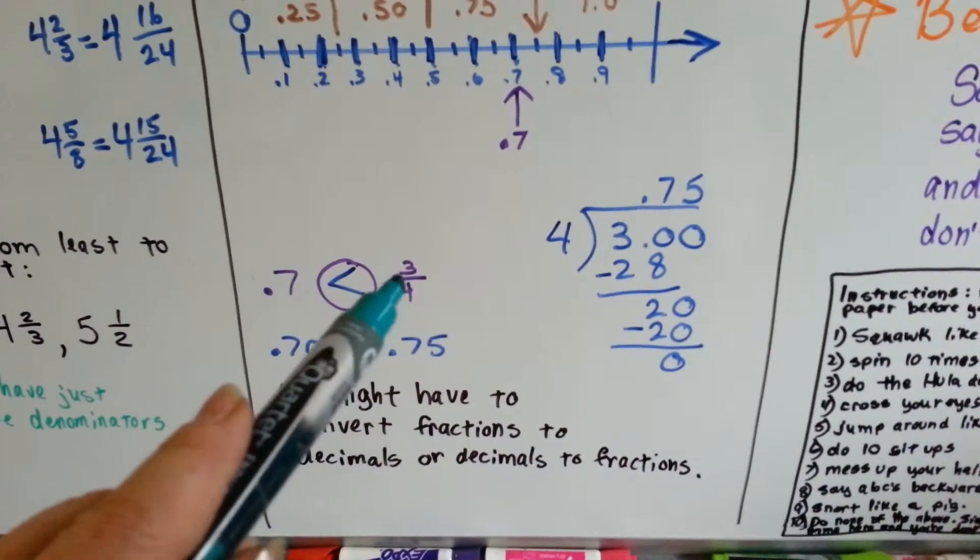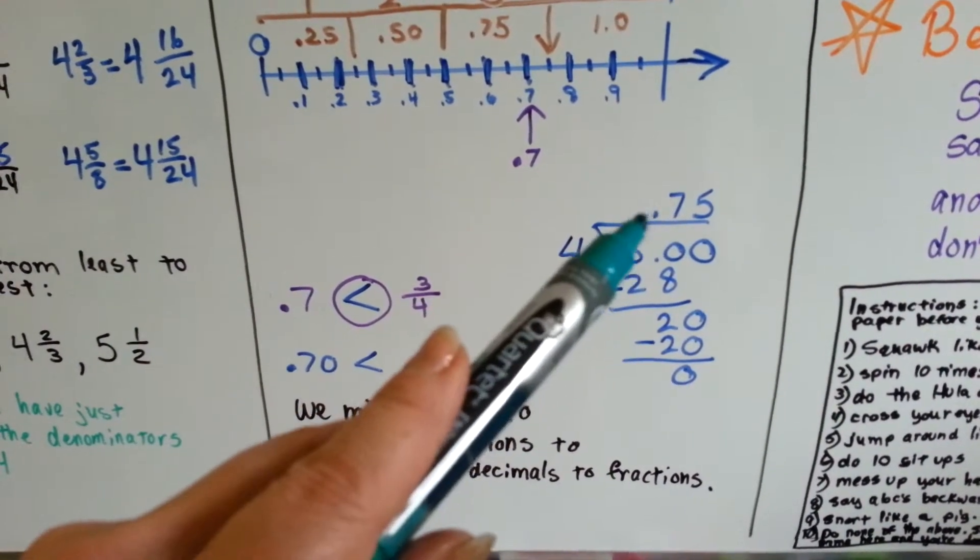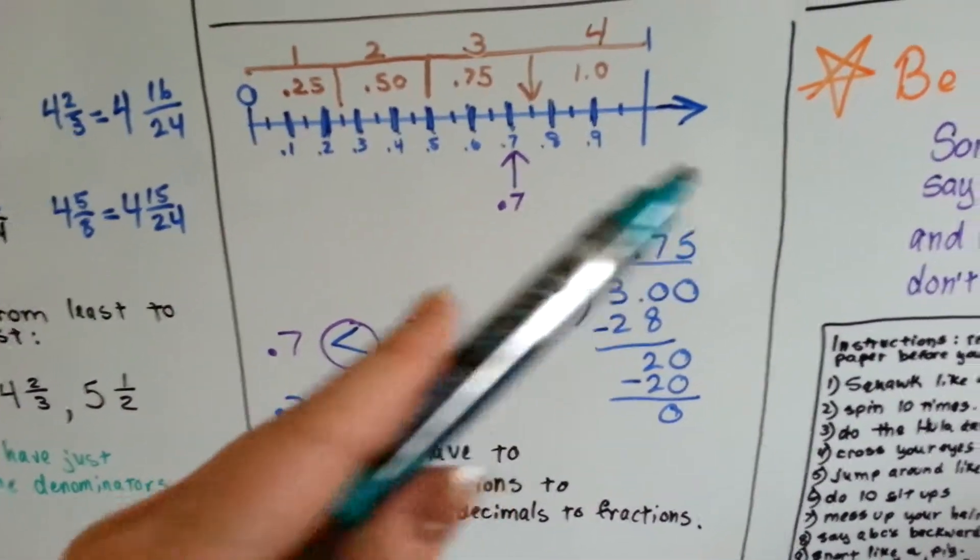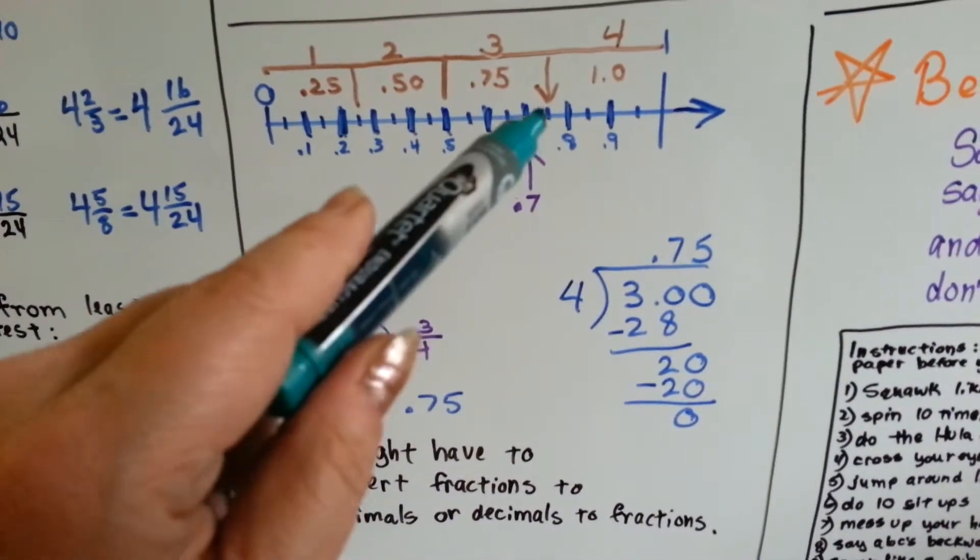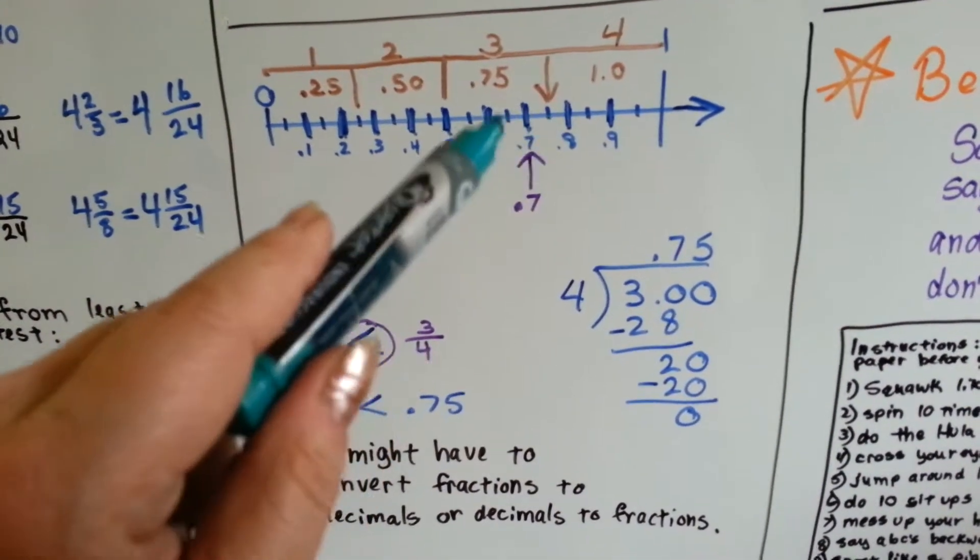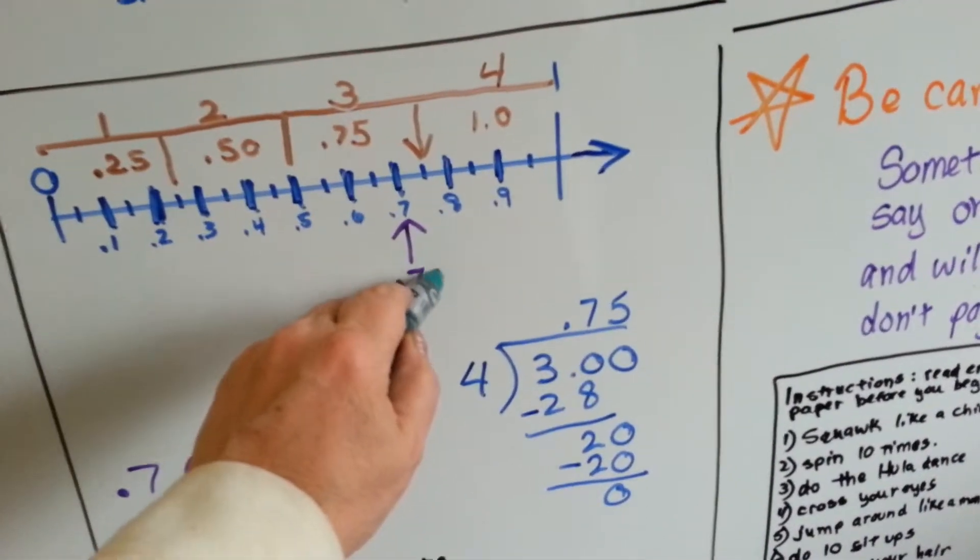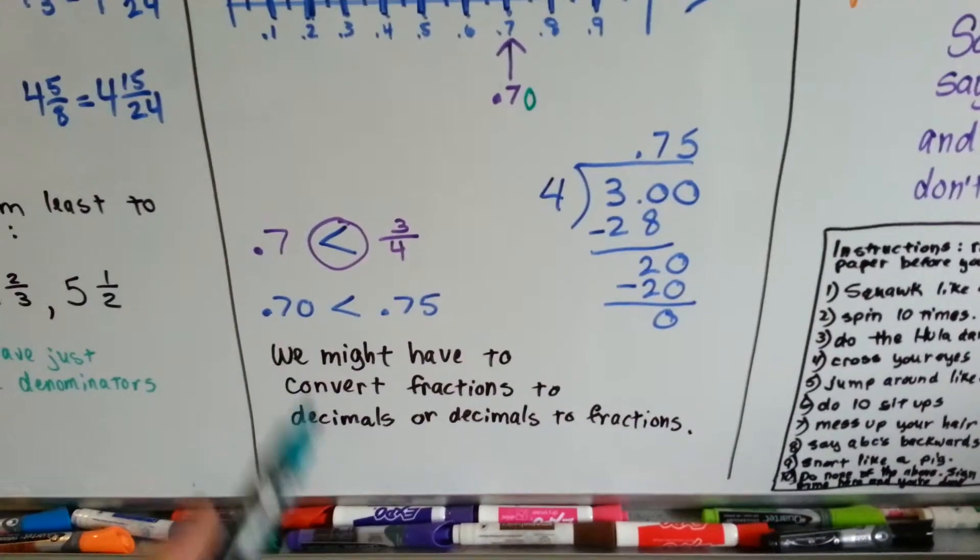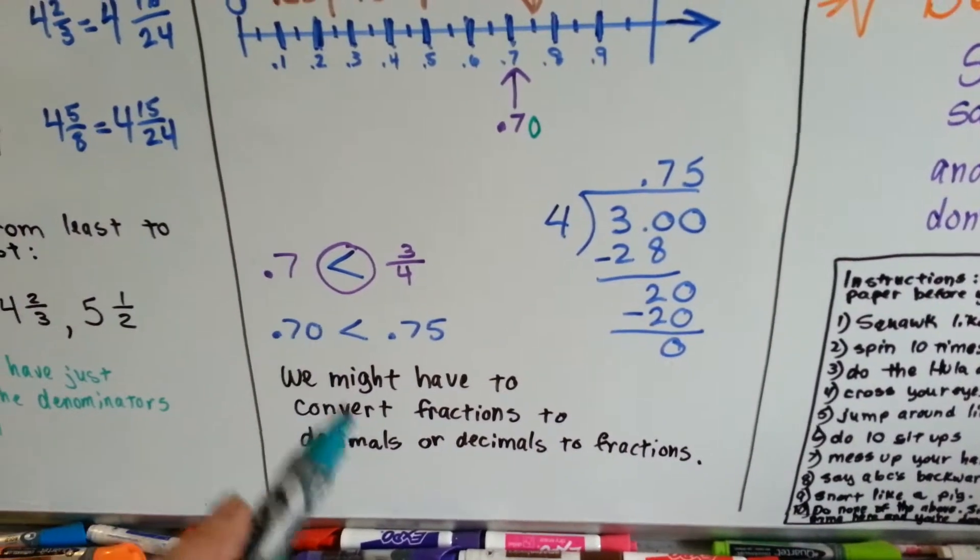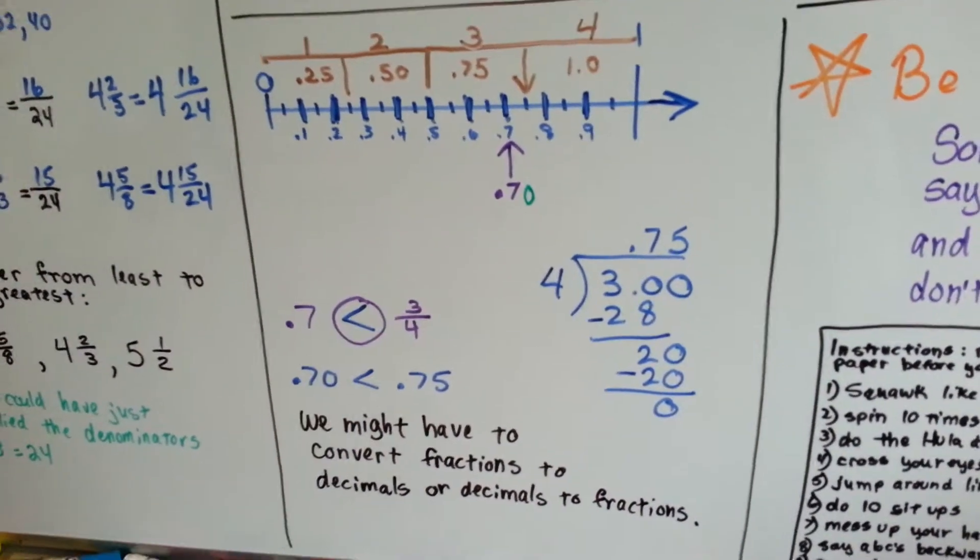So we can change this into a decimal like we did before and it comes out to .75 like it was up there. And we can see that .75 is just a little bit bigger than .7. Because there's really an invisible zero here, isn't there? It's like 70 compared to 75. So we might have to convert the fractions to decimals or decimals to fractions to see which one's greater.